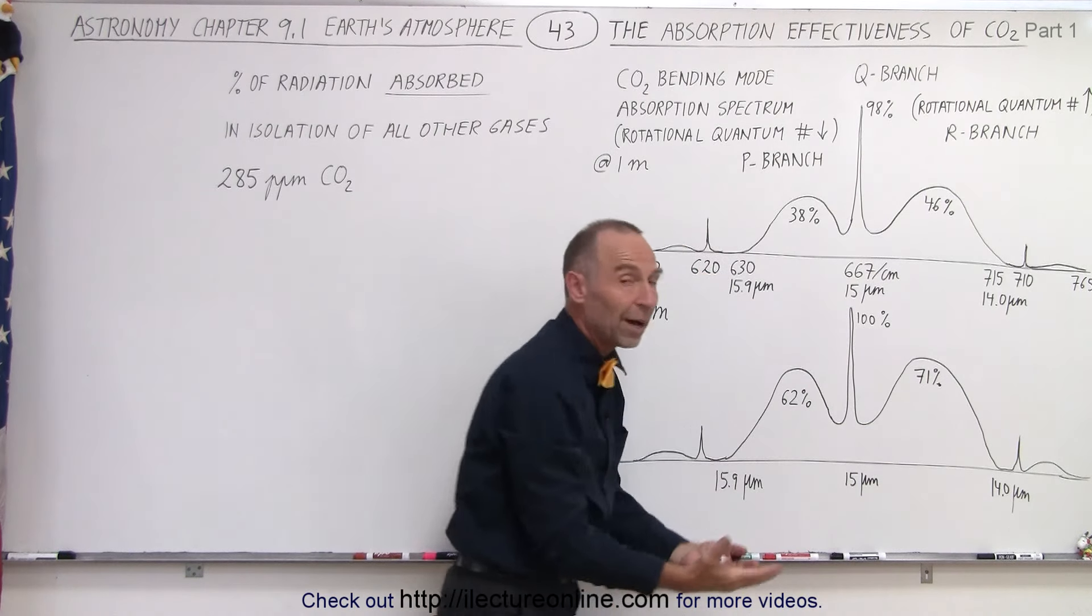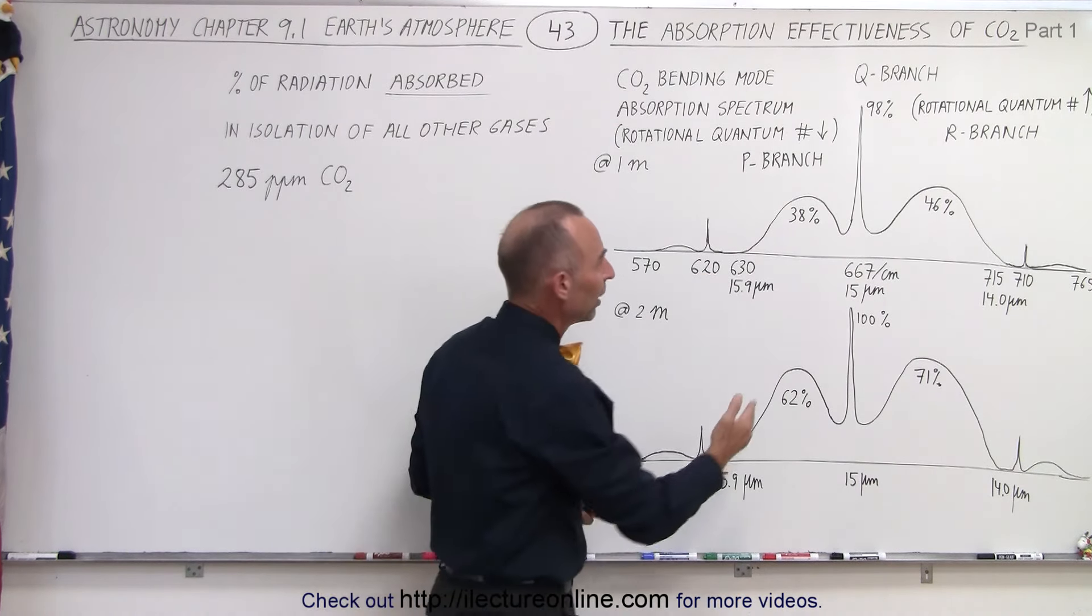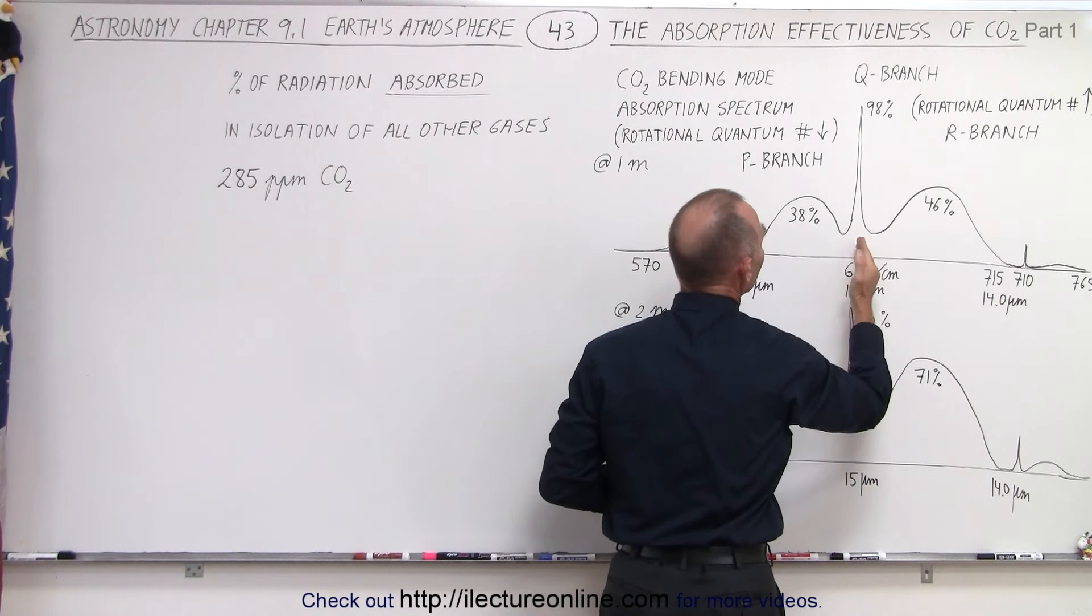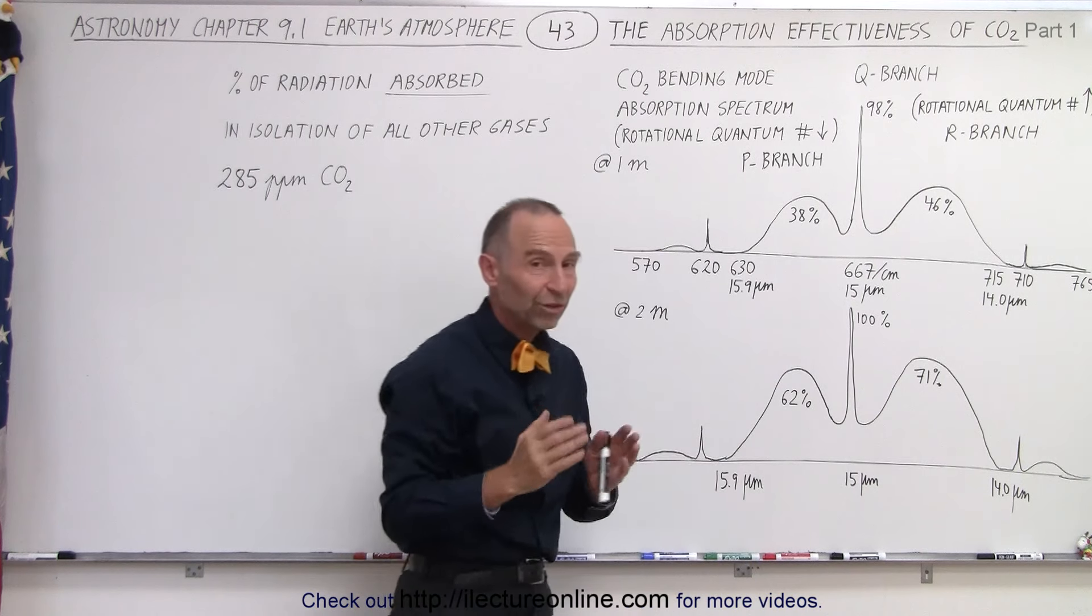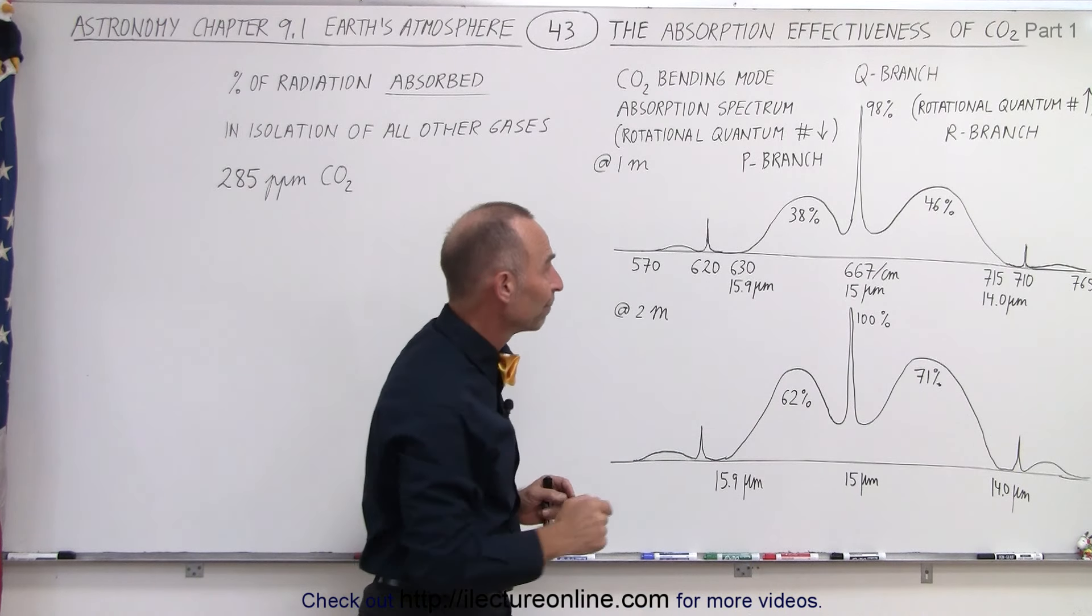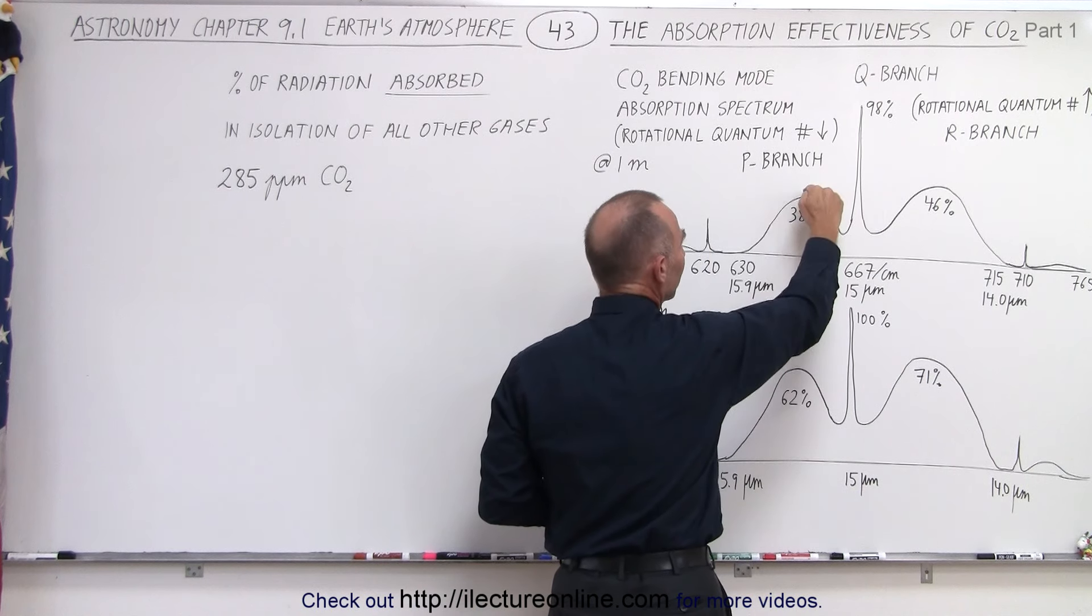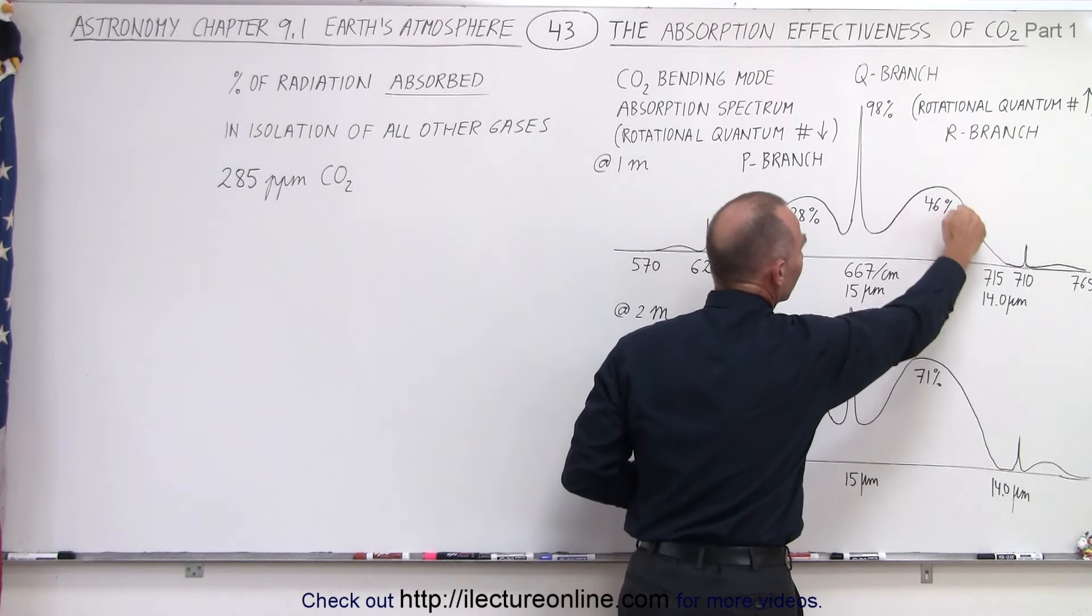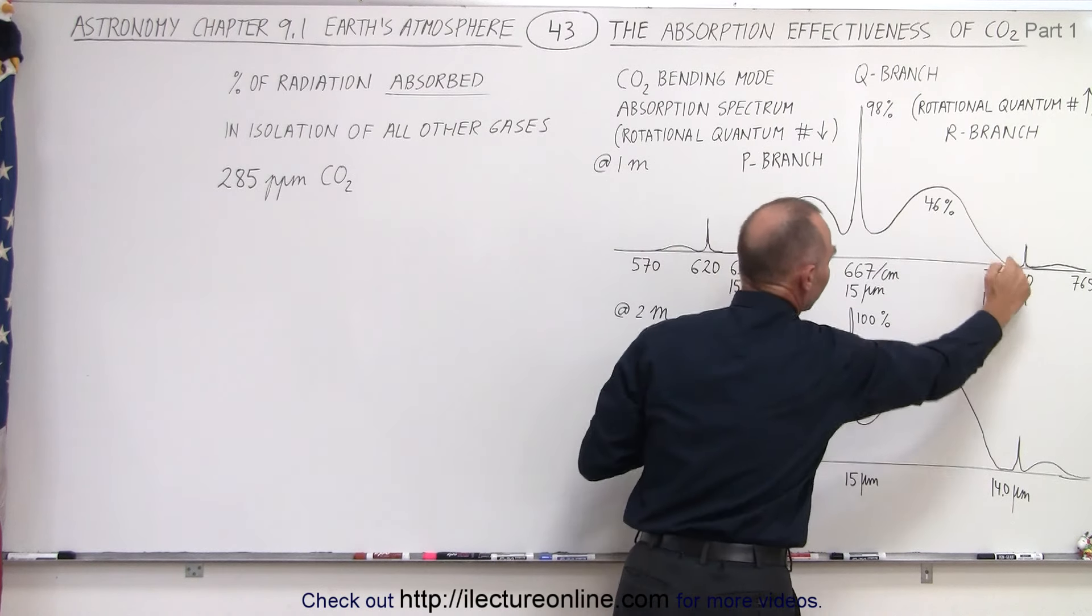So this curve represents the amount of energy absorbed from the surface. Notice that the central peak by 1 meter of elevation already absorbs 98% of what's available in that particular wavelength. The side lobes don't do quite as well initially, a peak of 38% for the P branch and a peak of 46% for the R branch. Of course, that drops off to near zero at the far ends.